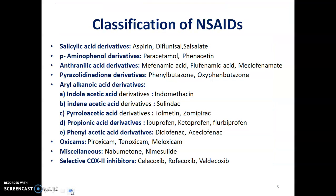Classification of NSAIDs: these drugs are classified into different categories. First is salicylic acid derivatives — examples are aspirin, diflunisal, salsalate. Second, para-aminophenol derivatives — examples are paracetamol and phenacetin. Third, anthranilic acid derivatives, also called phenamides — examples are mefenamic acid, flufenamic acid, meclophenamide. Fourth, pyrazolidinedione derivatives — examples are phenylbutazone and oxyphenbutazone.